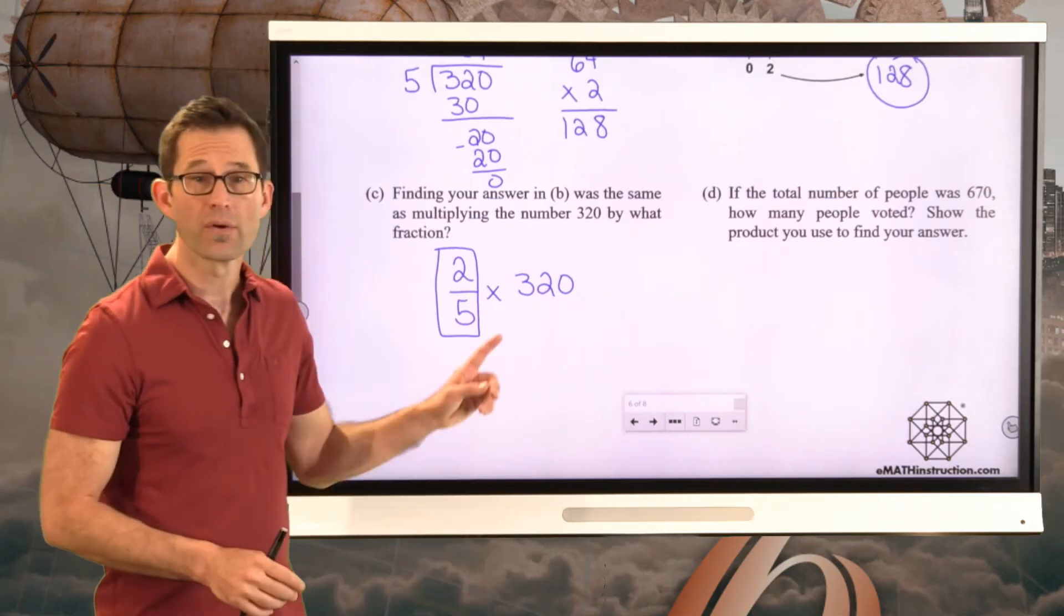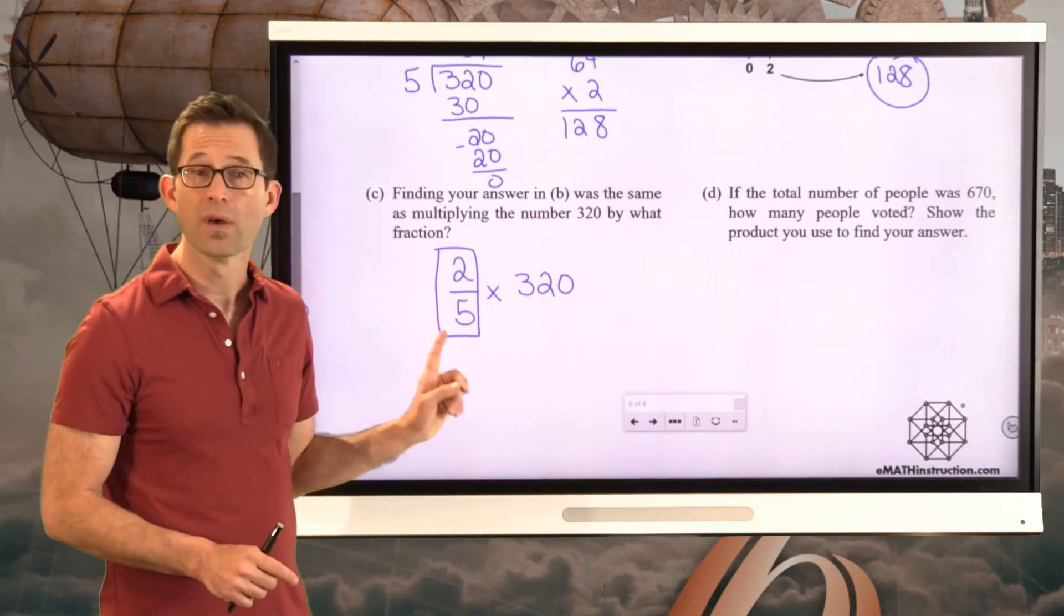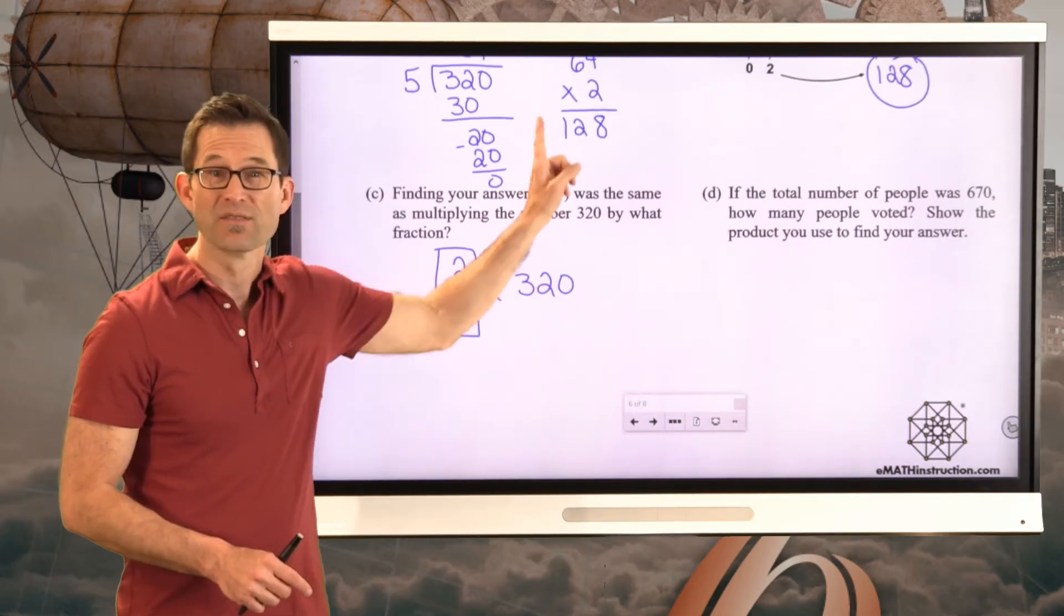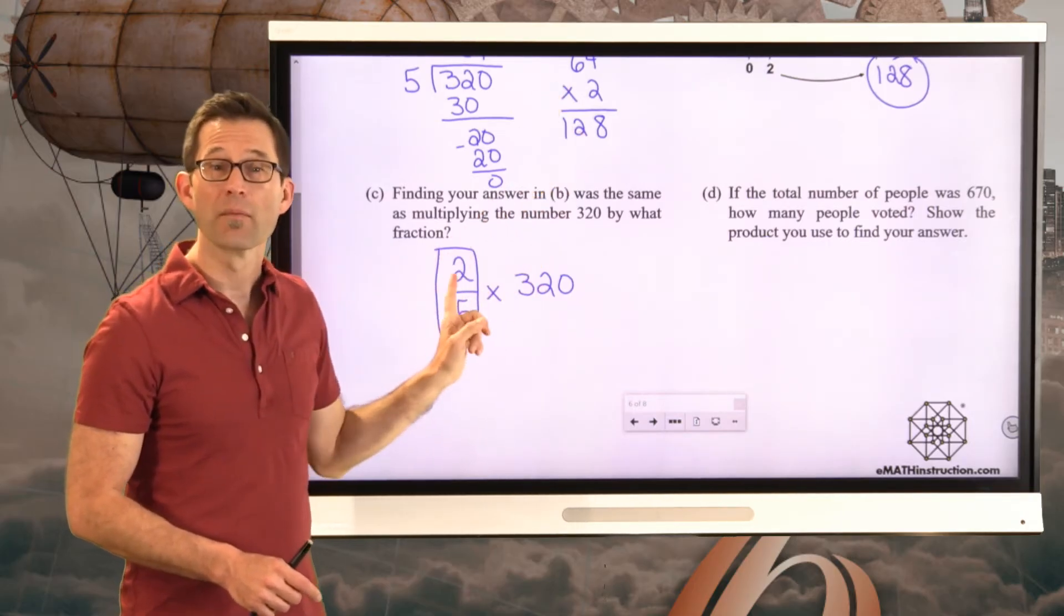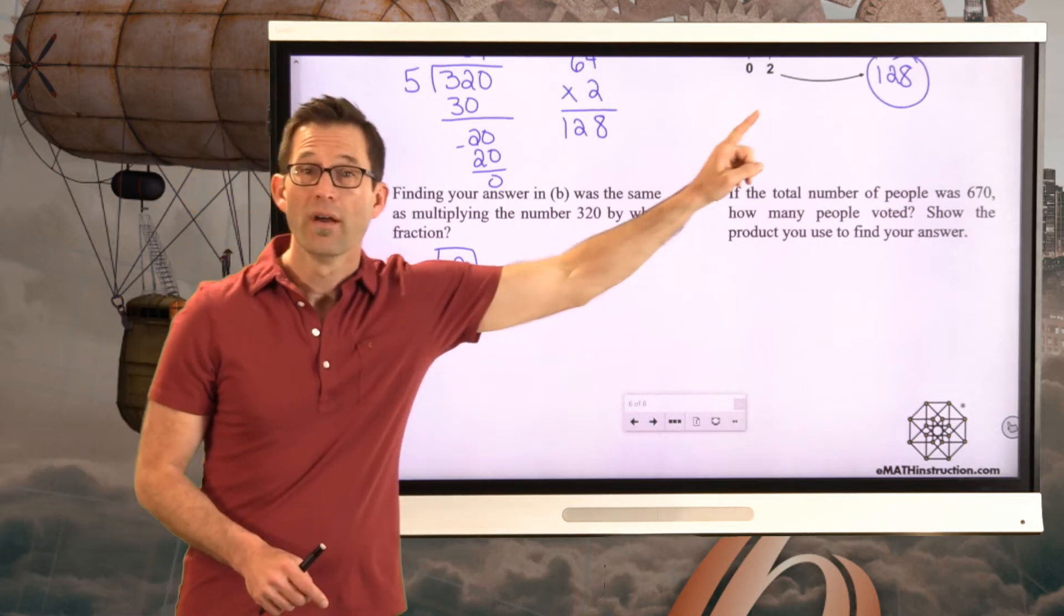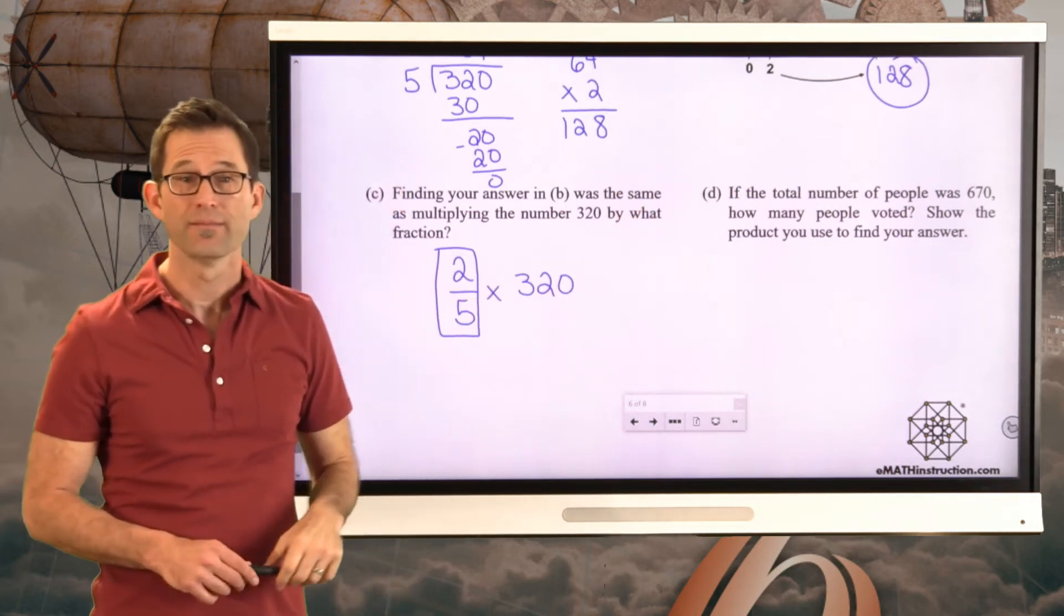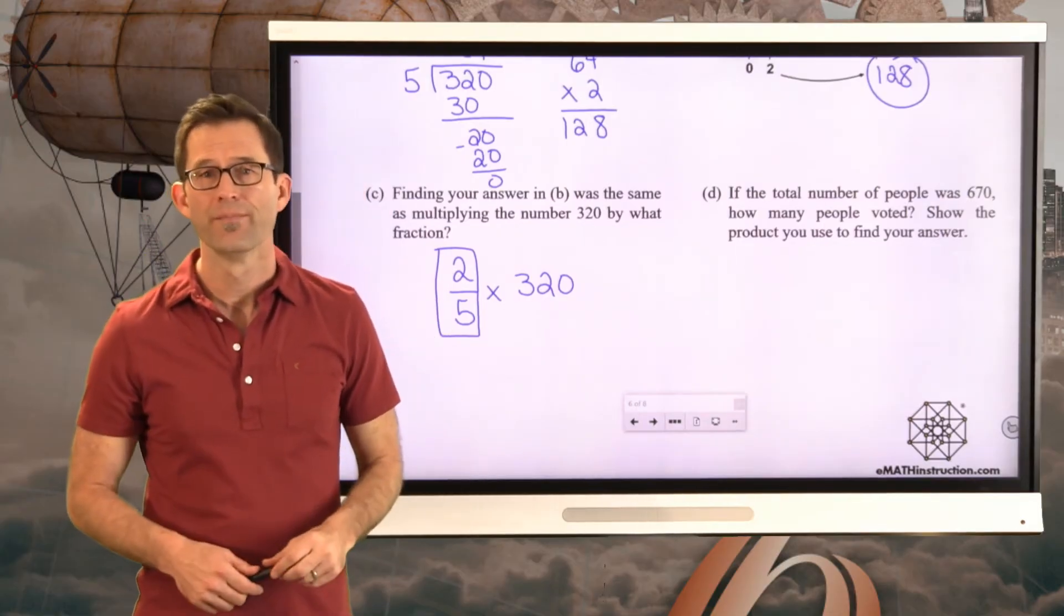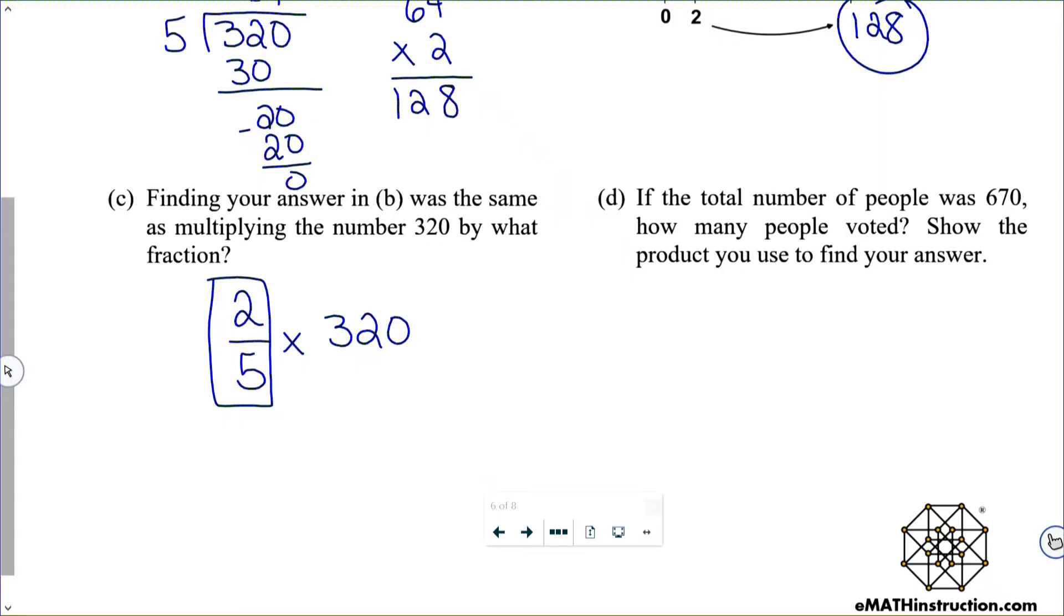But if I took 320 and I multiplied by two-fifths, the whole point there is I'm going to take 320, divide it by five. That gives me that 64. And then I'm going to multiply the 64 by two. And that gives me 128. So let's use that idea for letter D.